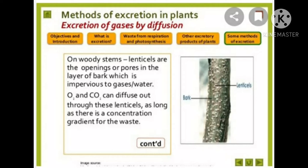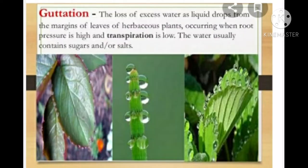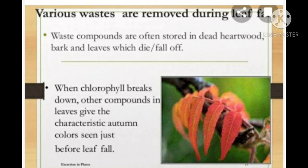Lenticels are lentil-shaped cells present on woody stems. Plants can get rid of excess water by processes like transpiration and guttation. Guttation means the loss of excess water as liquid drops from the margins of leaves of herbaceous plants. This occurs when root pressure is high and transpiration is low. The water usually contains sugars and salts.